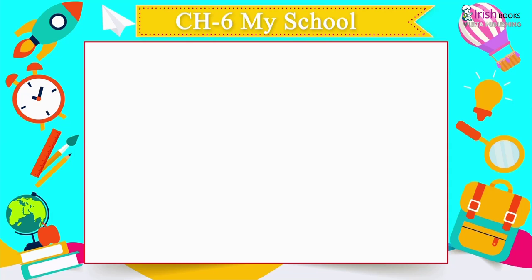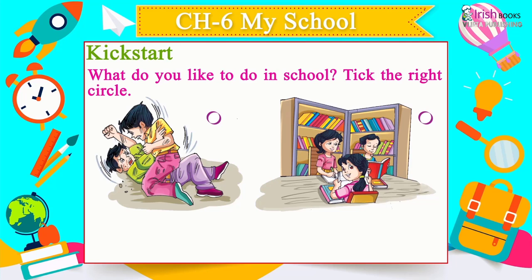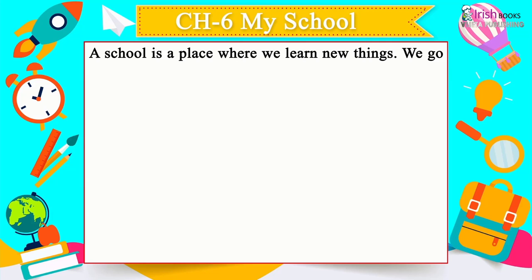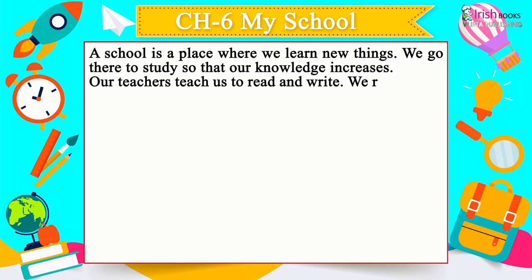Chapter 6: My School. A school is a place where we learn new things — we go there so that our knowledge increases. Our teachers teach us to read and write. We respect our teachers and obey them.